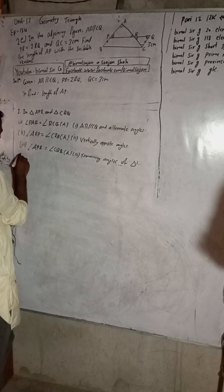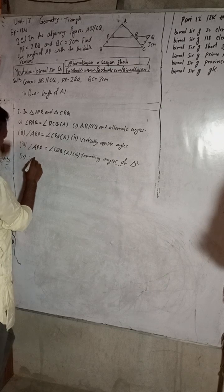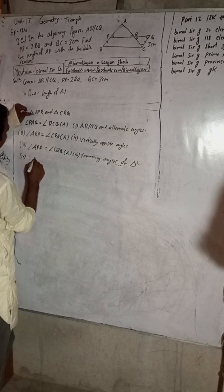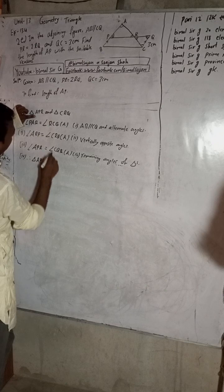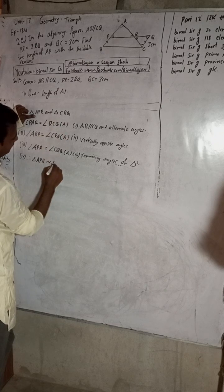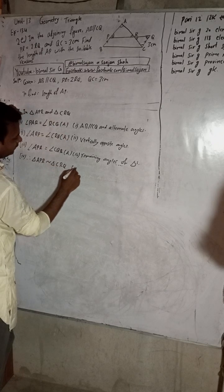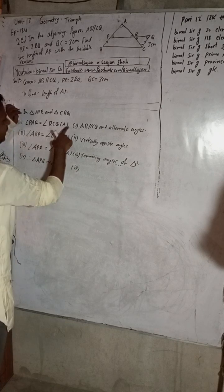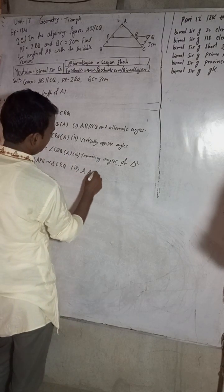Therefore, triangle APR is similar to triangle CRQ. The reason is the Angle-Angle-Angle (AAA) axiom.